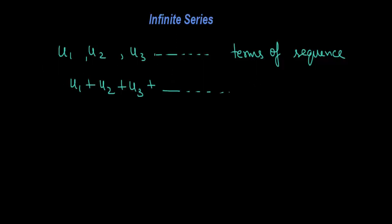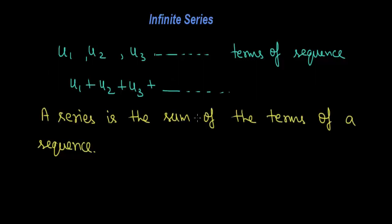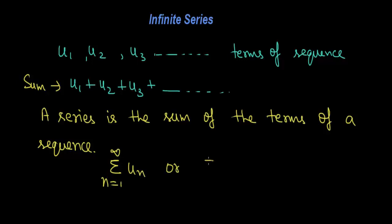A series is the sum of the terms of a sequence. If we collect all the terms of any sequence and sum them, that is called a series. We can denote it as sigma (n = 1 to infinity) of uₙ, or just sigma uₙ, where n varies from 1 up to infinity. This is called an infinite series.